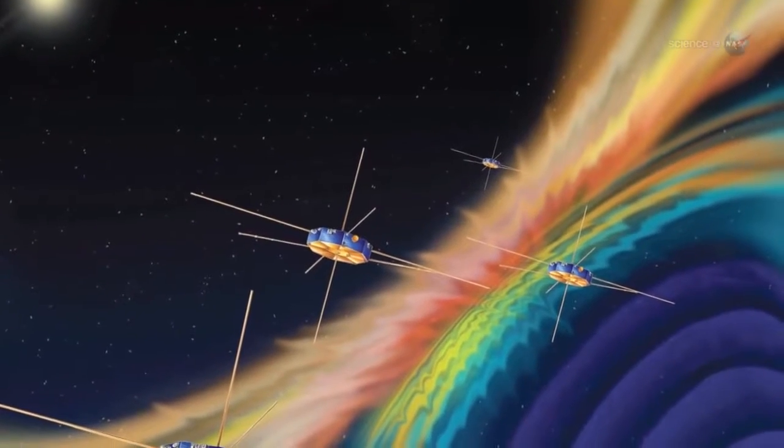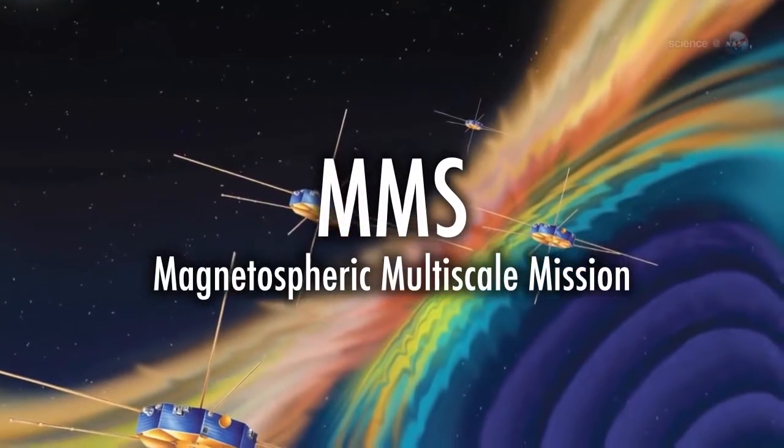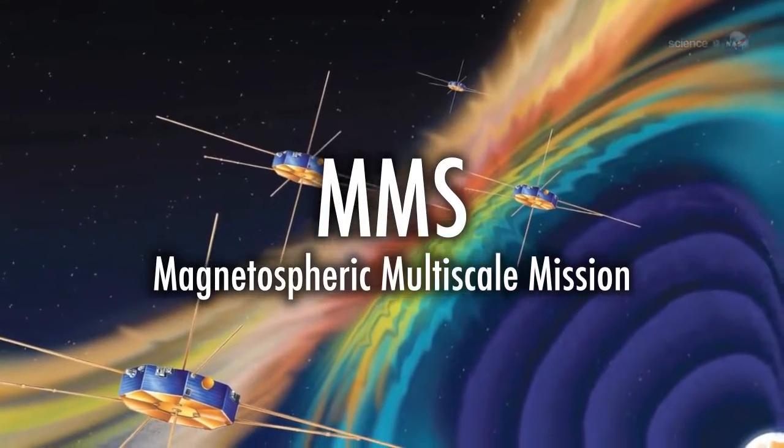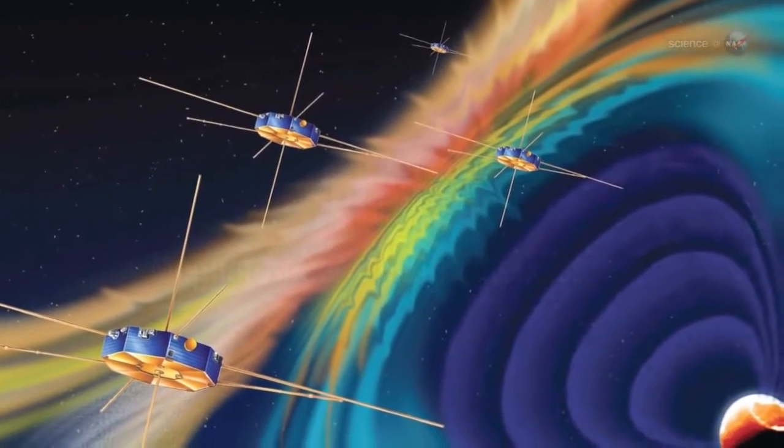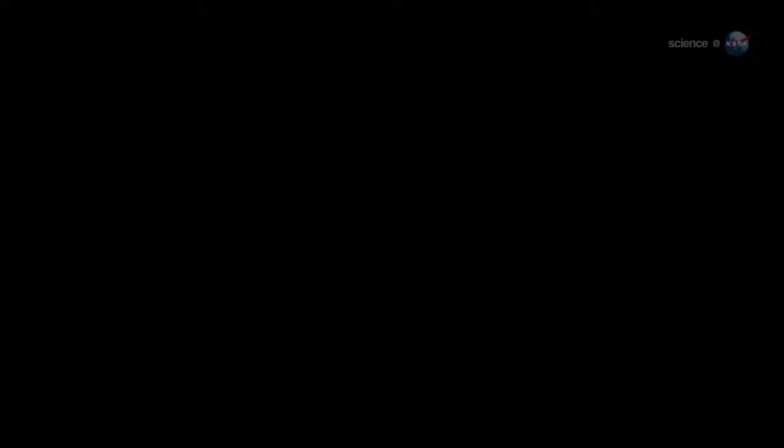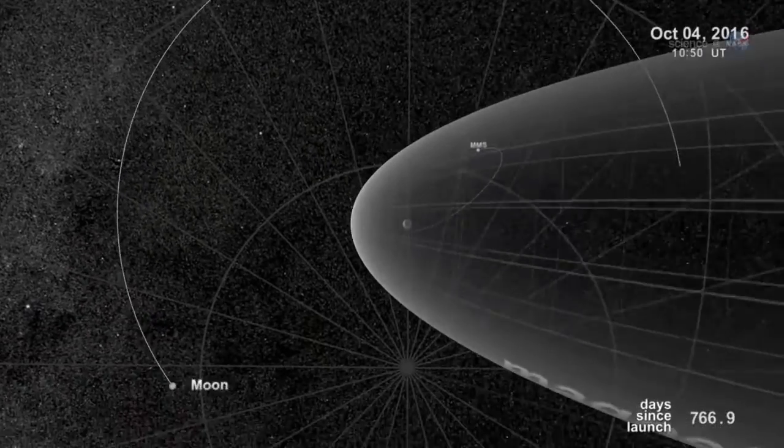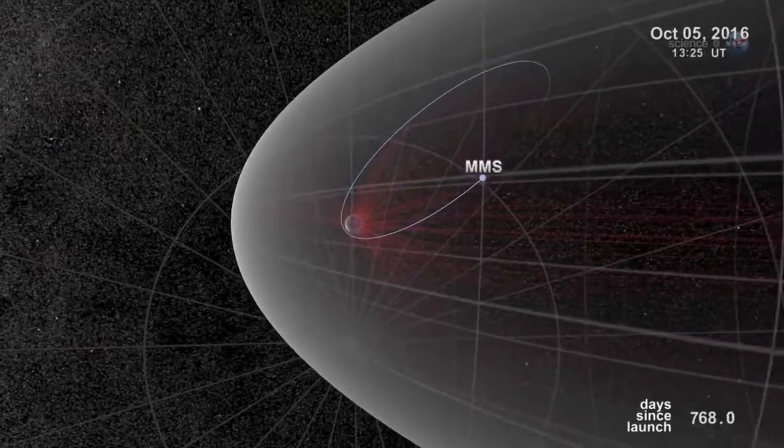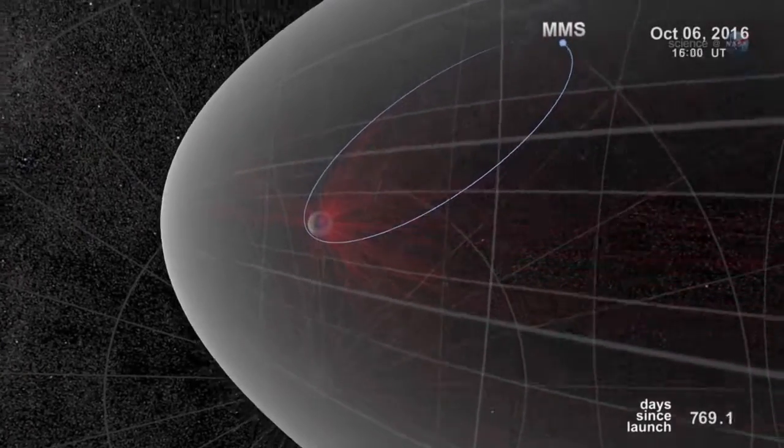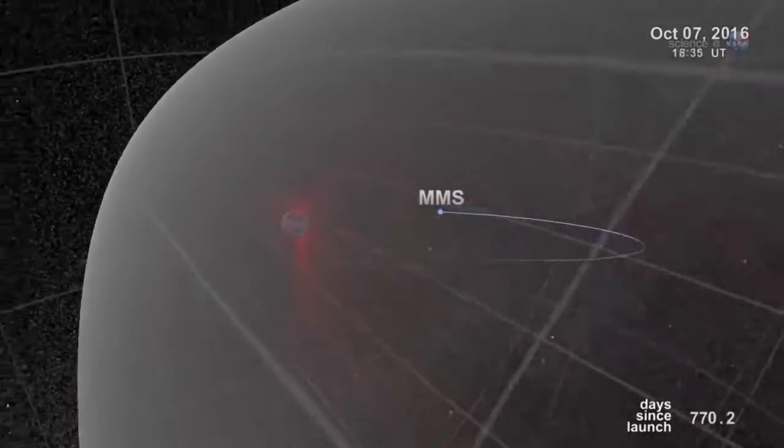NASA is planning a mission called MMS, short for Magnetospheric Multiscale Mission, due to launch in 2014 to study the phenomenon. Bristling with energetic particle detectors and magnetic sensors, the four spacecraft of MMS will spread out in Earth's magnetosphere and surround the portals to observe how they work.